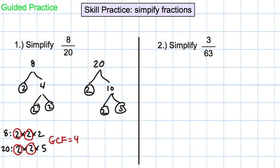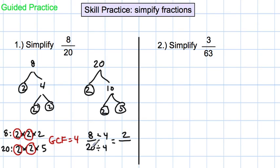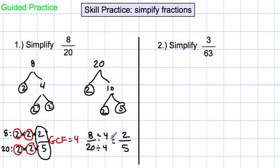Turning that into simplest form, take the fraction 8 over 20, divide the 8 by the greatest common factor, and divide the 20 by the greatest common factor. 8 divided by 4 is 2, and 20 divided by 4 is 5. If you were doing the prime factorization method, look what's left: 2 over 5. So instead of circling, we cross out. I prefer the prime factorization method, but again it's up to you which one you want to do and perfect.